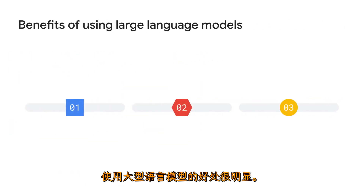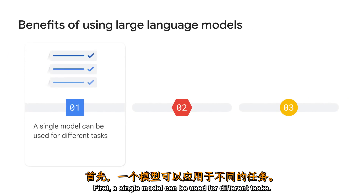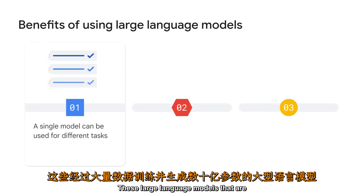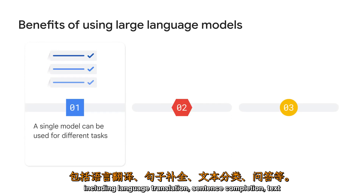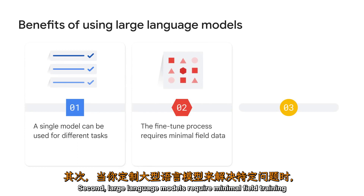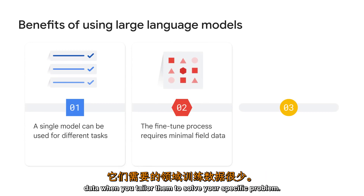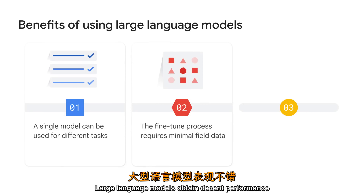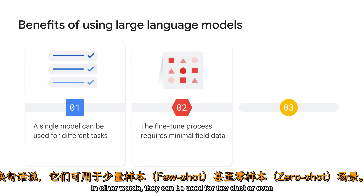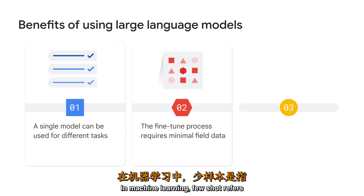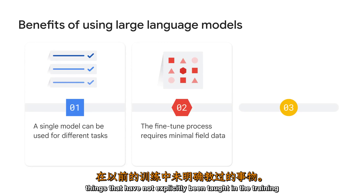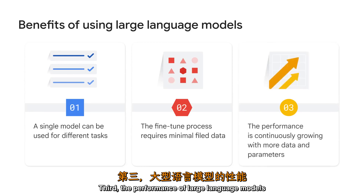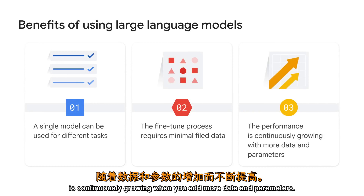The benefits of using large language models are straightforward. First, a single model can be used for different tasks. These large language models, trained with petabytes of data and generating billions of parameters, are smart enough to solve different tasks including language translation, sentence completion, text classification, question answering, and more. Second, large language models require minimal field training data when you tailor them to solve your specific problem — they can be used for few-shot or even zero-shot scenarios. Zero-shot implies a model can recognize things not explicitly taught during training. Third, the performance of large language models continuously grows when you add more data and parameters.